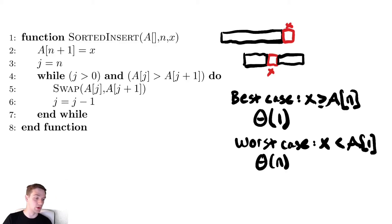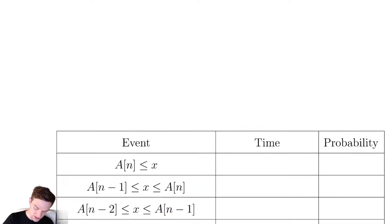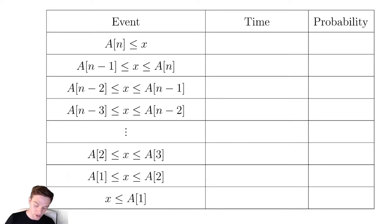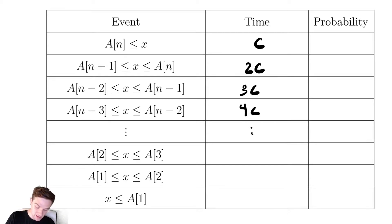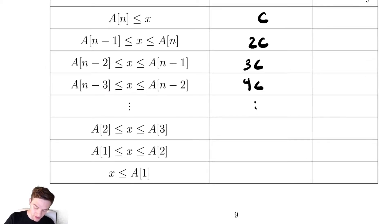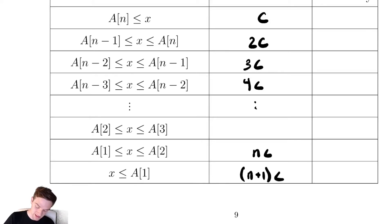Since we're in the probabilistic unit, we're also interested in the expected case. It's easiest to work this out manually using a table. If x is greater than or equal to every element that takes constant time; if we need one swap that's constant time plus one loop iteration; two runs of the loop; three runs; and so on. We need to be careful: the number of operations is n+1 times c, then n·c, then (n−1)·c, and so forth.